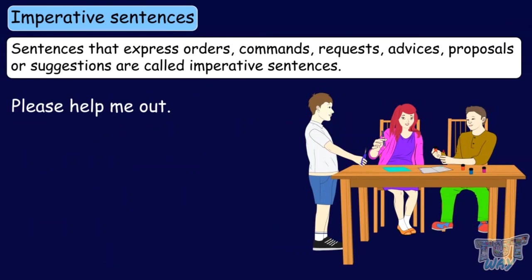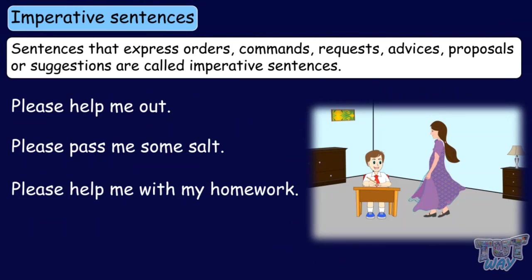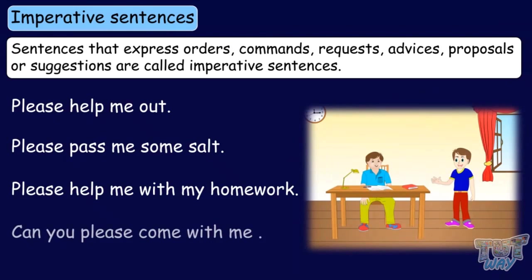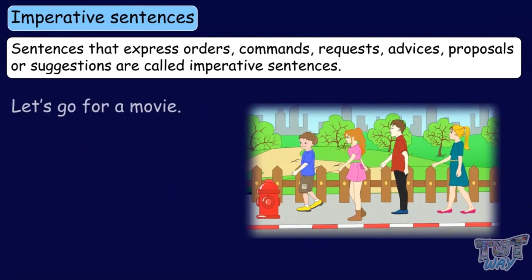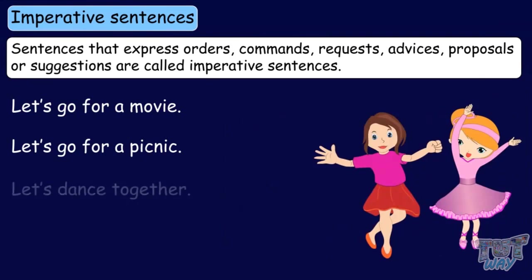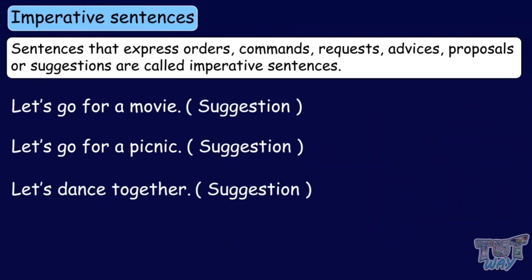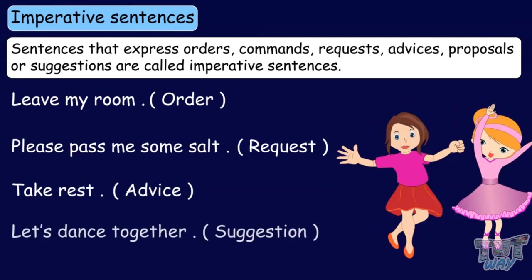Please help me out. Please pass me some salt. Please help me with my homework. Can you please come with me? These are some examples of requests. Let's go for a movie. Let's go for a picnic. Let's dance together — all these are examples of suggestions. Sentences giving orders, requesting someone, giving advice, or giving suggestions are called imperative sentences.